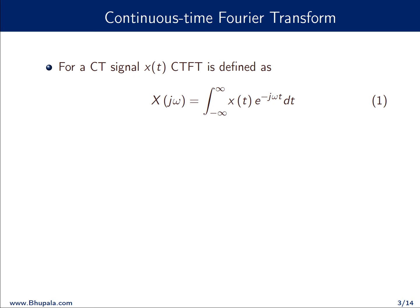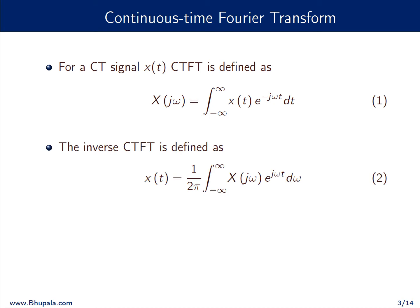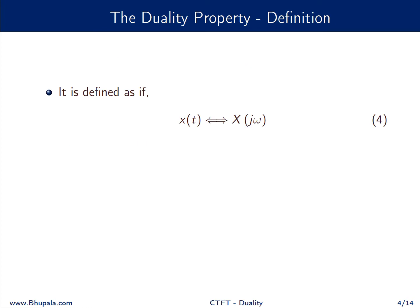Let us start with the definition of the continuous time Fourier transform. For a signal x(t), we define the Fourier transform to be X(jω) equal to the integral from minus infinity to infinity of x(t) e^(−jωt) dt. The corresponding inverse Fourier transform is given by x(t) equal to (1/2π) times the integral from minus infinity to infinity of X(jω) e^(jωt) dω. These two functions x(t) and X(jω) are related in this fashion.